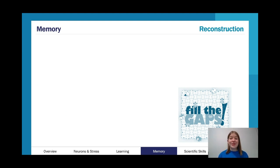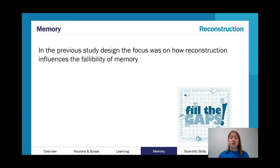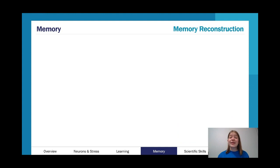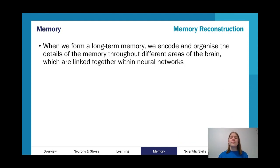One thing we also look at with memory is reconstruction. In the previous study design this was examined through Loftus's eyewitness testimony research — how we can easily suggest false memories to someone. When we reconstruct a memory, we combine actually remembered information with other available information to make a more complete memory. This can be a liability as seen in Loftus's work, but it can also be a strength — making it easier to draw connections and bring more knowledge in. When forming a long-term memory, we encode and organize its details using different areas of the brain.